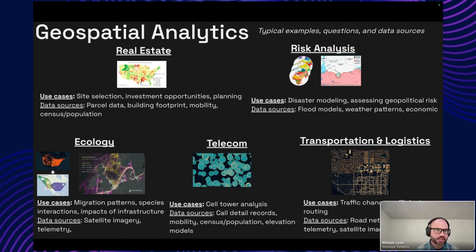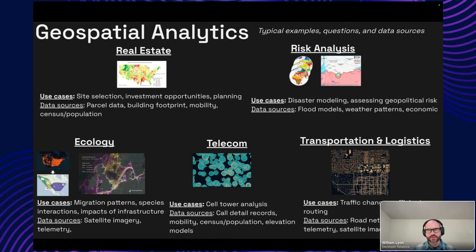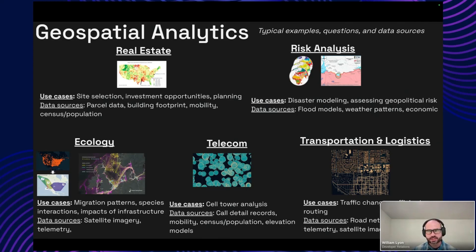For example, in the real estate industry, a common use case is site selection, identifying investment opportunities, managing infrastructure, and planning. Data sources might be parcel data, building footprint data derived from satellite imagery, and mobility data. In the risk analysis world, this could be disaster modeling, pricing risk, pricing insurance products, assessing geopolitical risks — with data sources like flood models, weather patterns, and satellite imagery with object detection machine learning. In ecology, things like migration patterns, species interactions, impacts of infrastructure. In the telecom industry, things like cell tower analysis — where should I place my next cell tower, and do I have good quality of service, analyzing call detail records and mobility data.